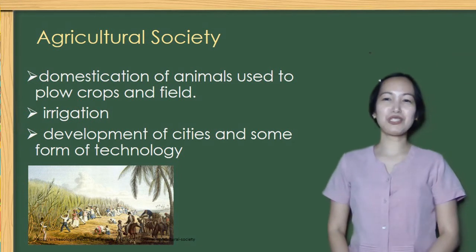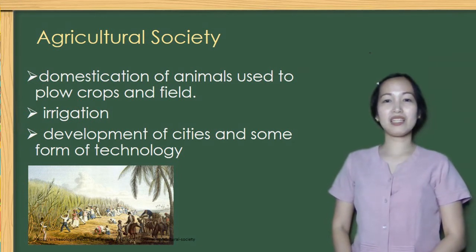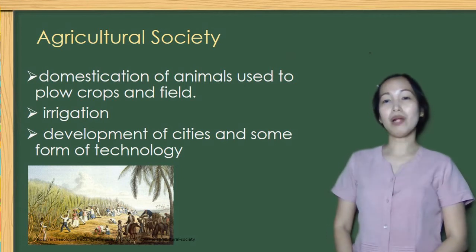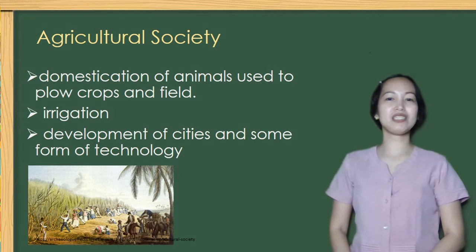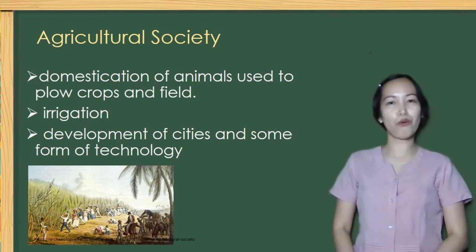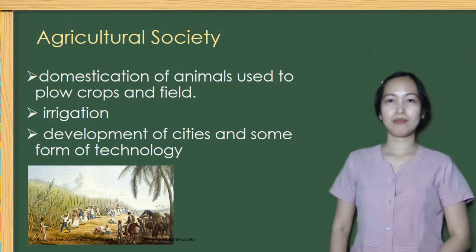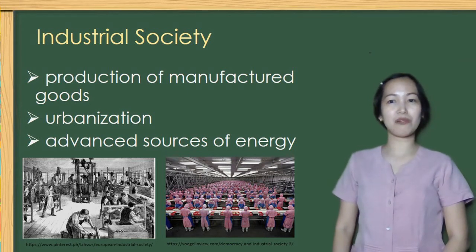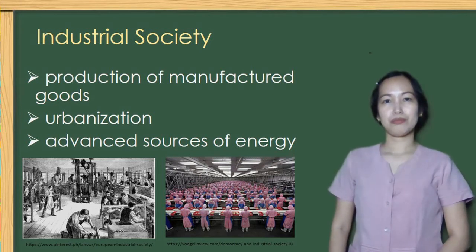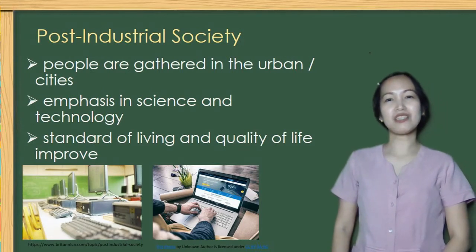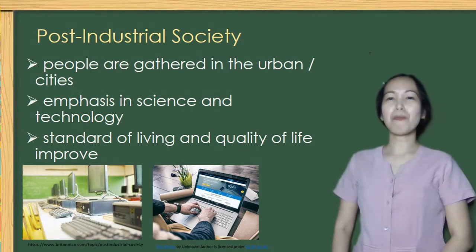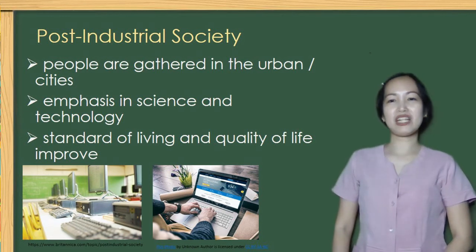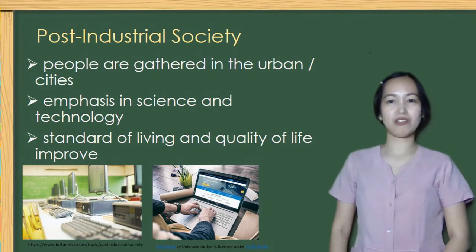Next is agricultural society. Under this society, domestication of animals was used to plow crops and fields. They also had irrigation and development of cities and some form of technology. Fifth is industrial society, where production of manufactured goods and urbanization happened, and they have advanced sources of energy. Last is post-industrial society, where the introduction of modern technology and equipment, mass computerization, and white-collar service occupations has changed man's society into a more complex one.